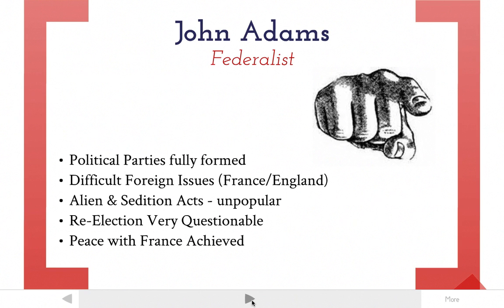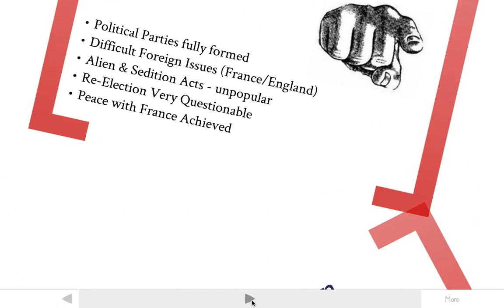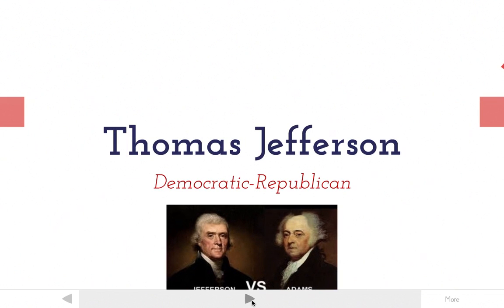The thing that stands out most from John Adams' time as president is that he passed the Alien and Sedition Acts, and we've been debating that all week. What the Alien and Sedition Acts did for the Federalists was make John Adams very unpopular with the people. So when it came time for John Adams to run for president again, his re-election was very questionable, even though peace with France was achieved. John Adams loses that election in 1800.